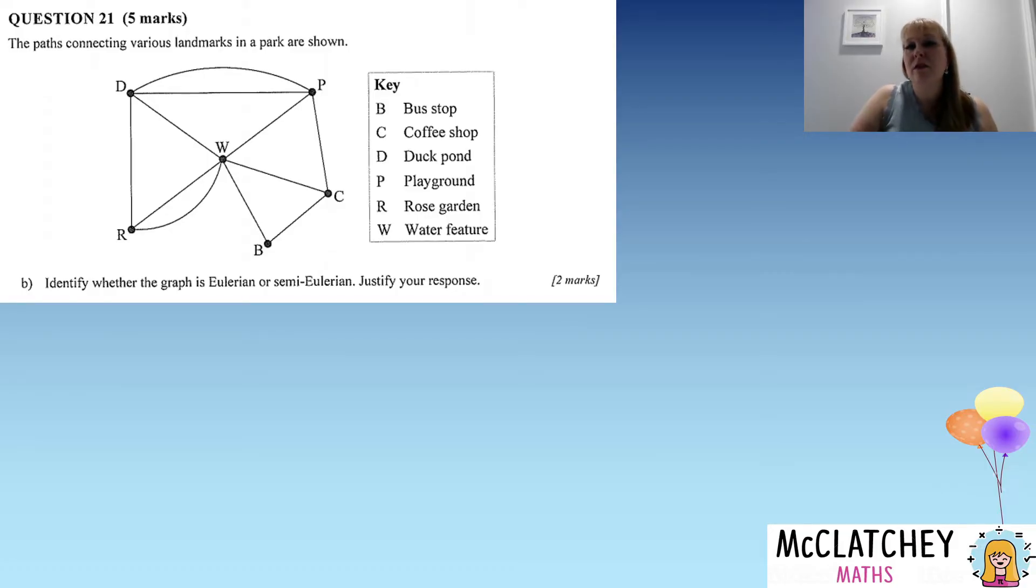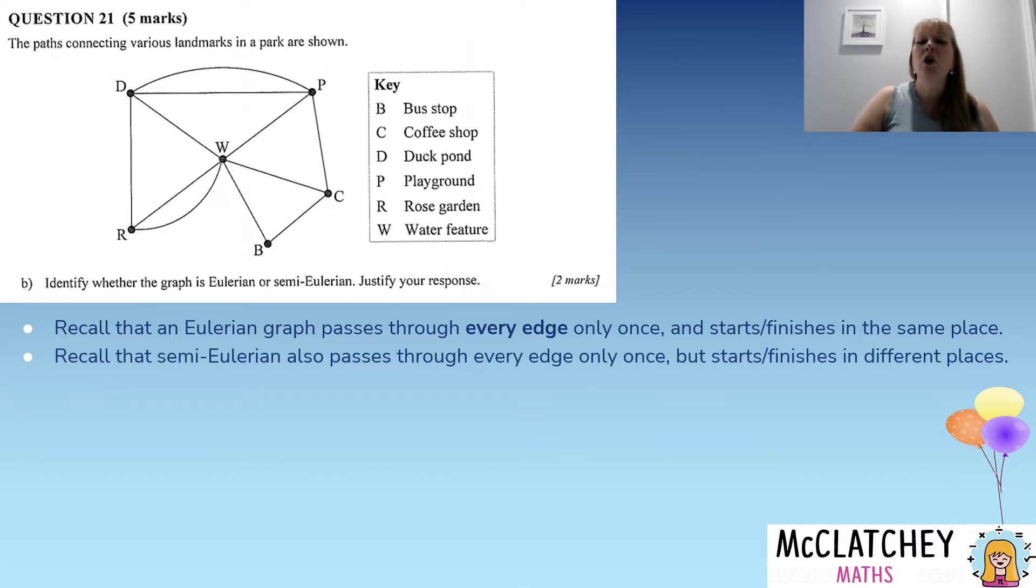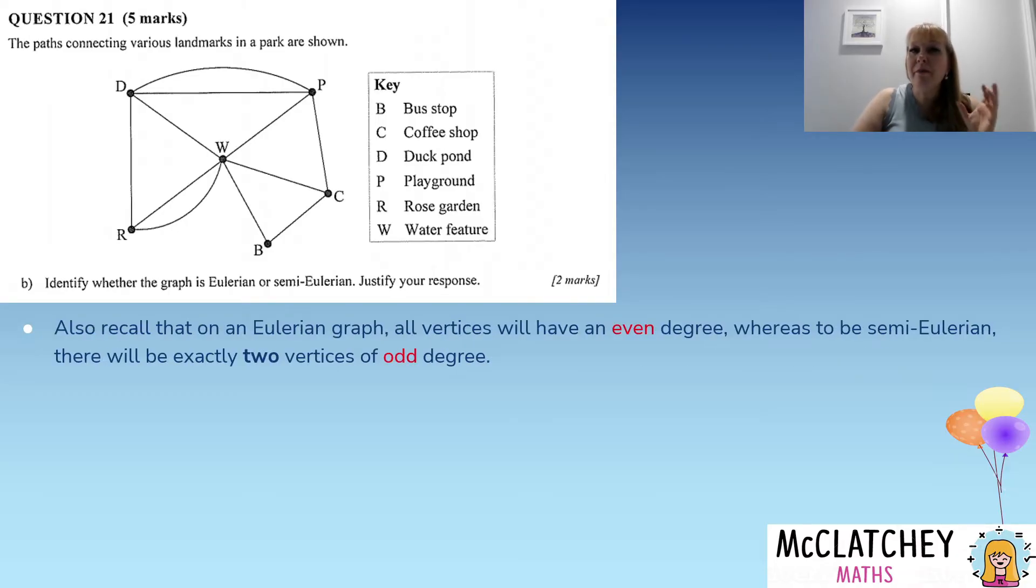Part B: identify whether the graph is Eulerian or semi-Eulerian and justify your response. This is worth two marks, so in this case identifying which it is is our first mark, the justification is the second mark. So let's work out what this language means. What does it mean to be Eulerian? Well, it means it passes through every edge only once and starts and finishes in the same place, compared to a semi-Eulerian which also passes through every edge only once and starts and finishes in different places. You'd also remember, this is a key thing to remember, that in an Eulerian graph every vertex has even degree, whereas if it's going to be semi-Eulerian, it'll have exactly two vertices of odd degree.